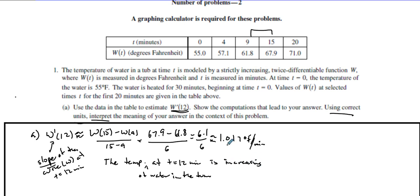The temperature of water in the tub at t = 12 minutes is increasing. Why do we know it's increasing? Because it is positive. So we know the water in the tub is increasing at a rate.